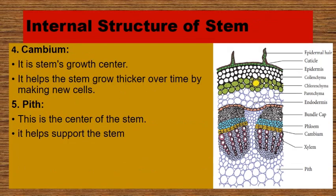4. Cambium — it is the stem's growth center. It helps the stem grow thicker over time by making new cells. 5. Pith — this is the center of the stem and it helps support the stem. You can see the cambium and pith shown here.